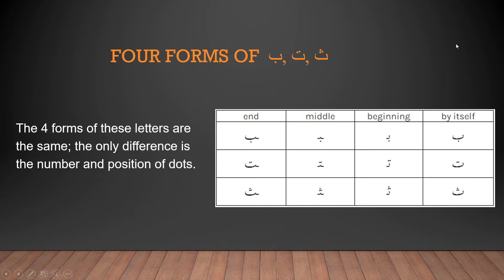As we have already learned, all Arabic alphabets have four forms depending on the position they are found in a word. The forms of Ba, Ta, and Sa are quite similar to each other — the only difference seen is the dots.